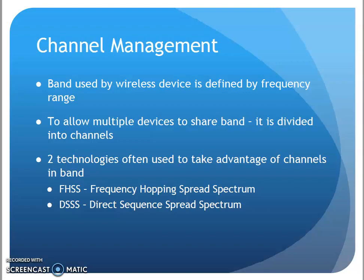CNT 120, Chapter 6, Wireless Communications. We're on the section now on Channel Management. With wireless communications, there are different technologies used to broadcast data through a frequency band. Two technologies typically get used: frequency hopping spread spectrum or direct sequence spread spectrum.